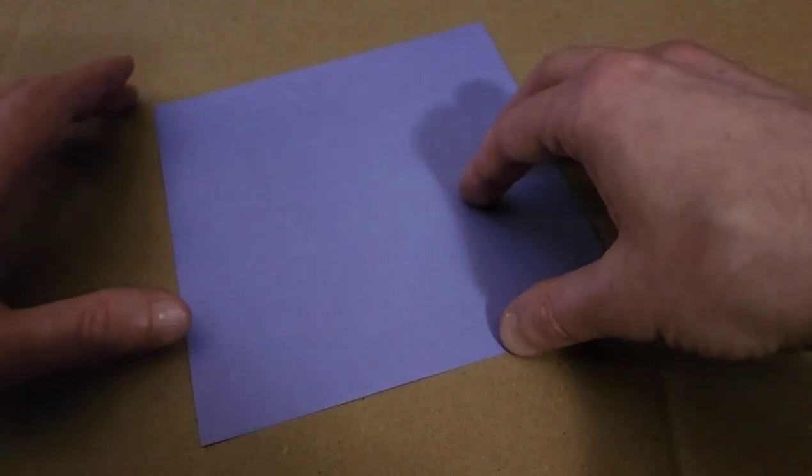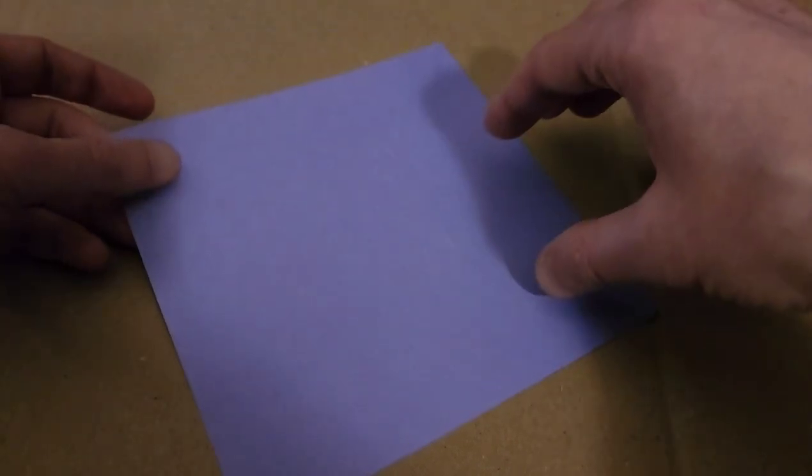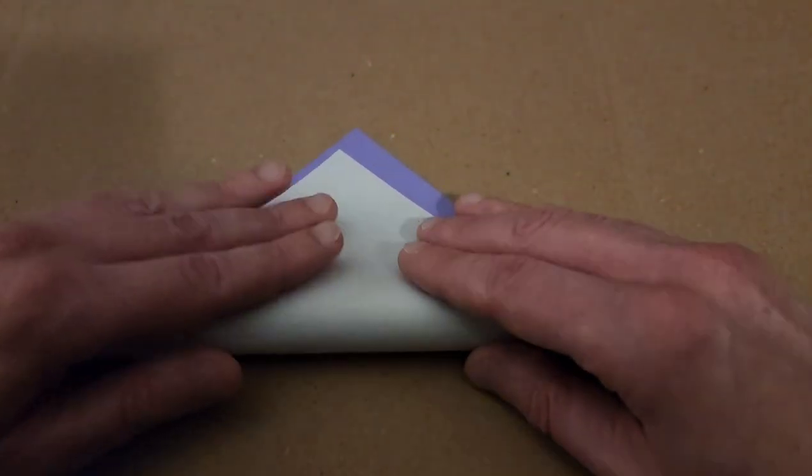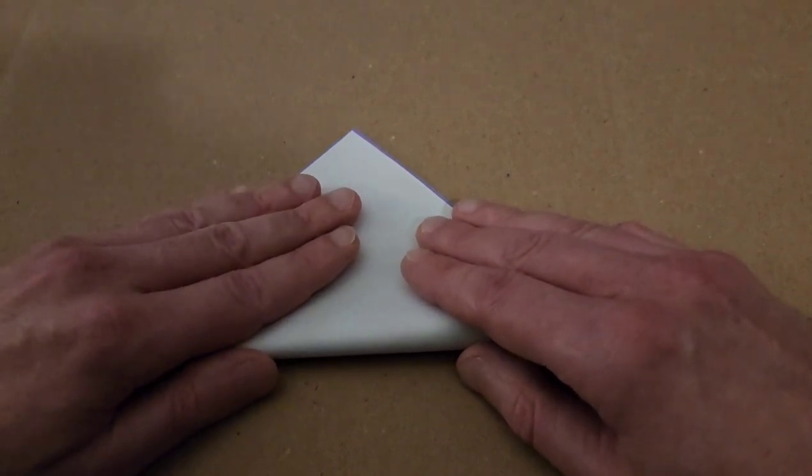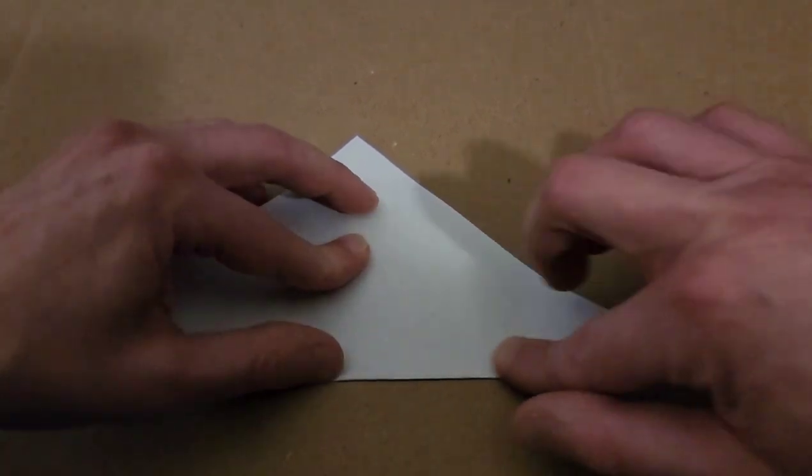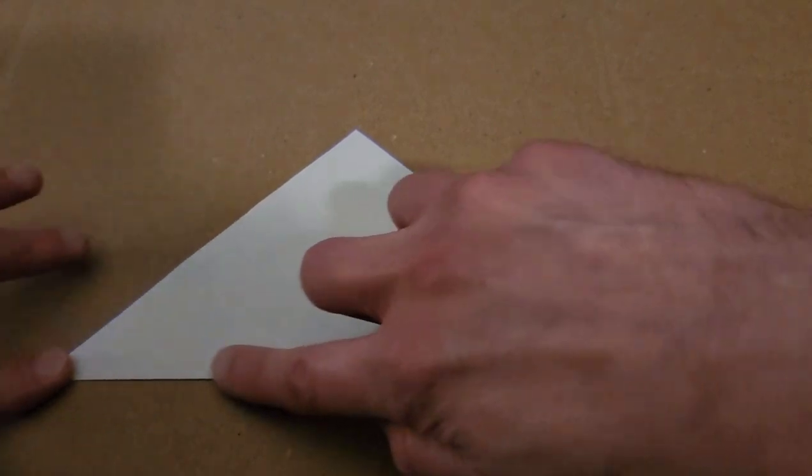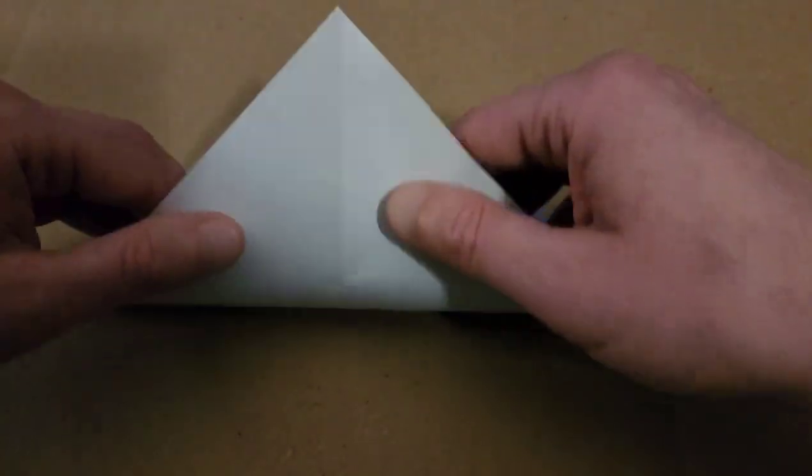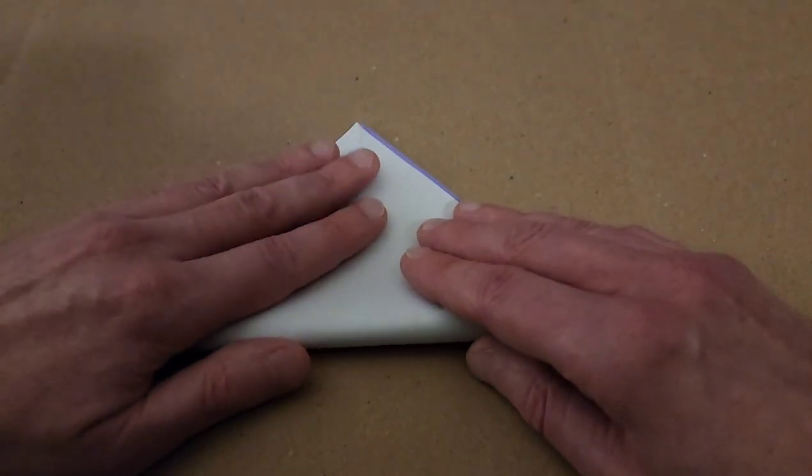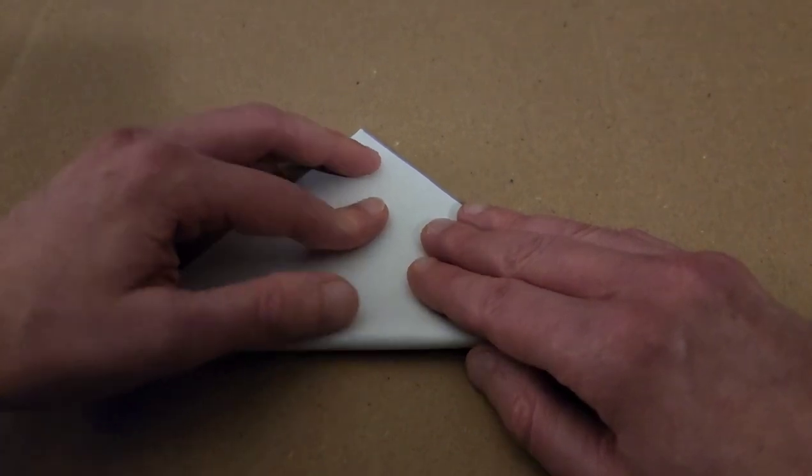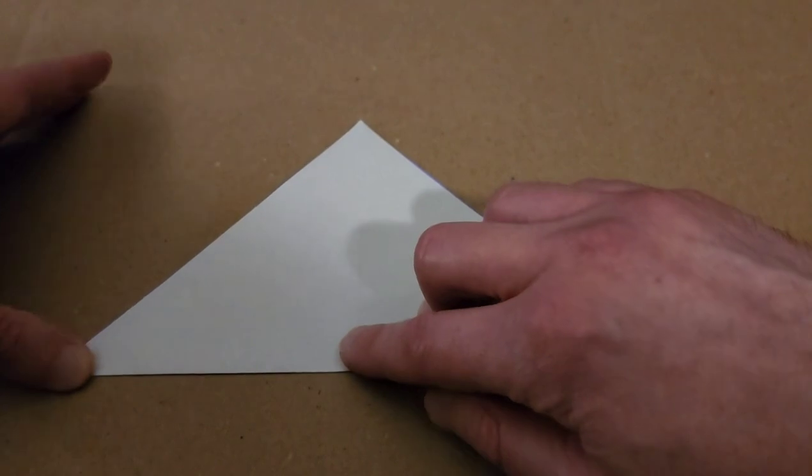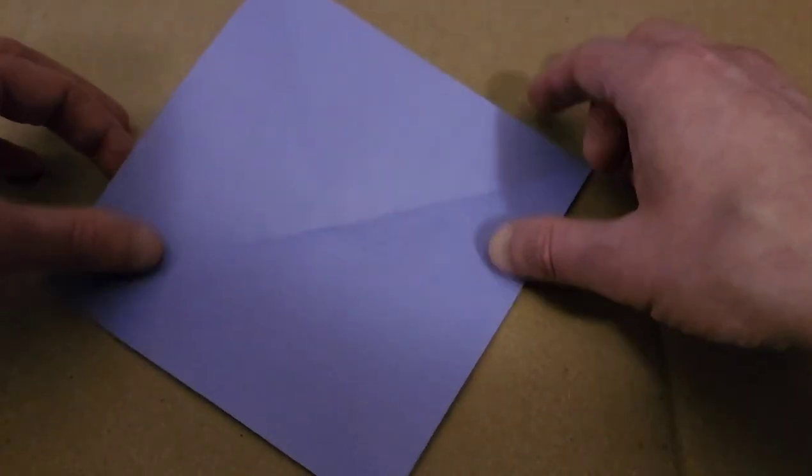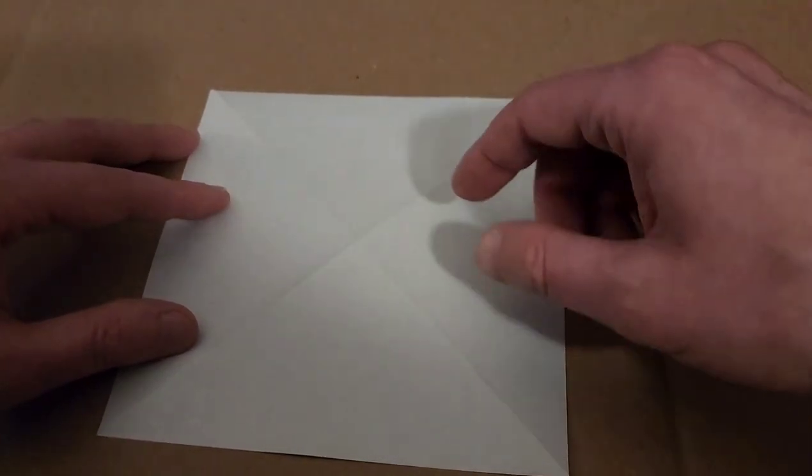Okay, so we have a bunch of preliminary folds that you're probably going to be very used to. It is the bird base. So starting with the white side facing up, going to fold our piece into a triangle. And then open, turn, and do the same thing once again. There we go. And then open, and then flip it over.